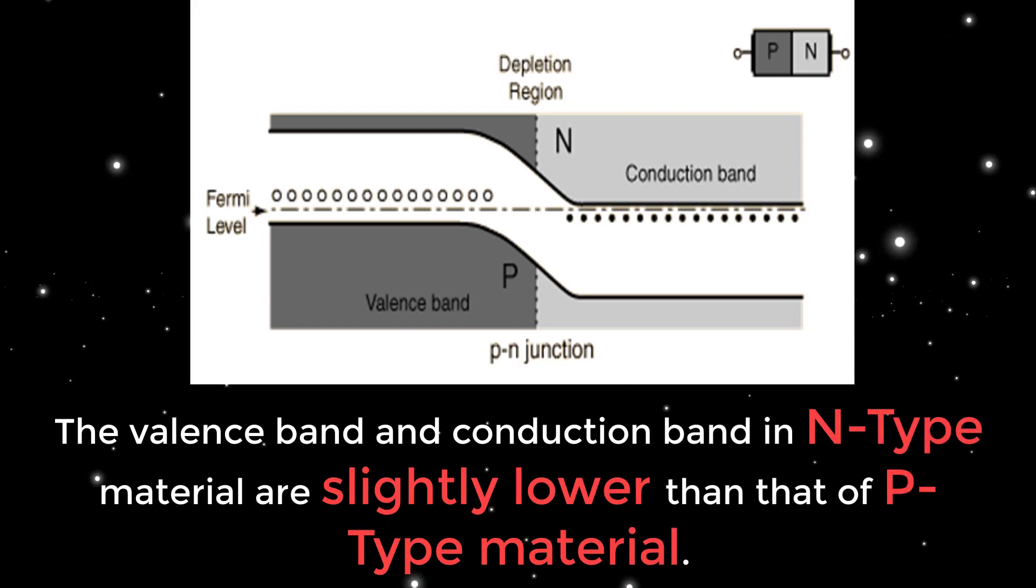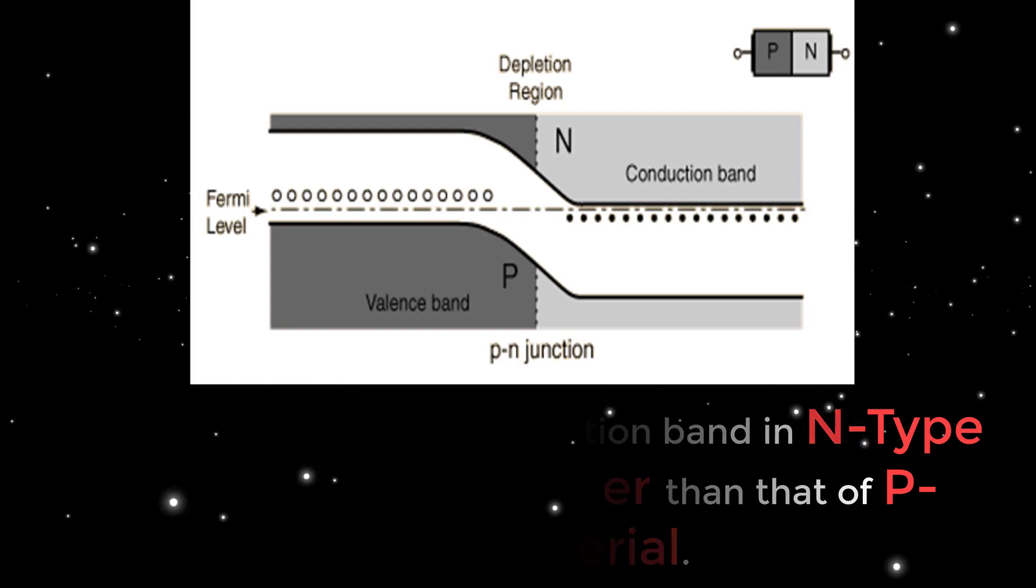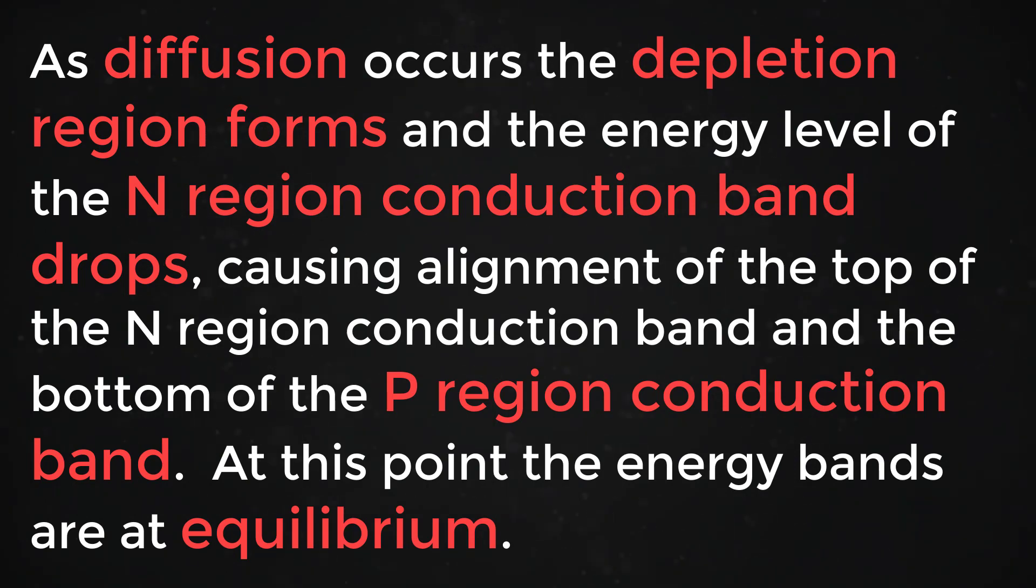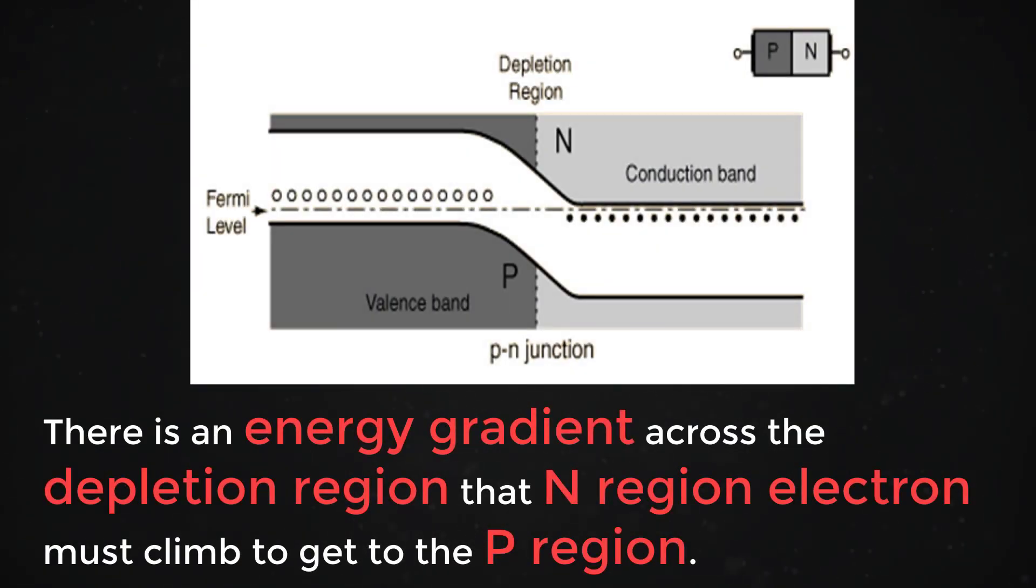The valence band and the conduction band in n-type material are slightly lower than that of the P-type material. As diffusion occurs, the depletion region forms and the energy level of the end region conduction band drops, causing alignment of the top of the end region conduction band and the bottom of the P-region conduction band. At this point, the energy bands are at equilibrium. There is an energy gradient across the depletion region that n-region electrons must climb to the P-region.